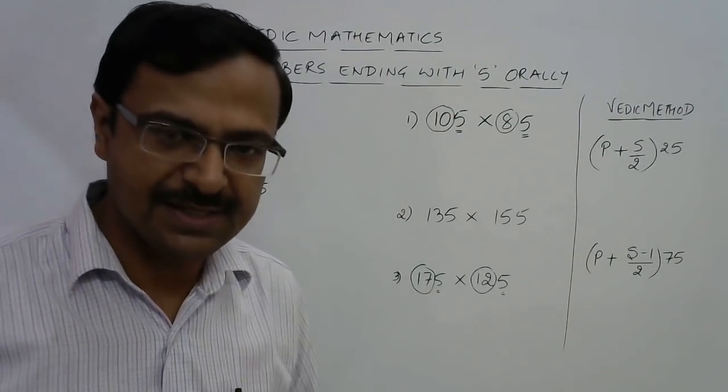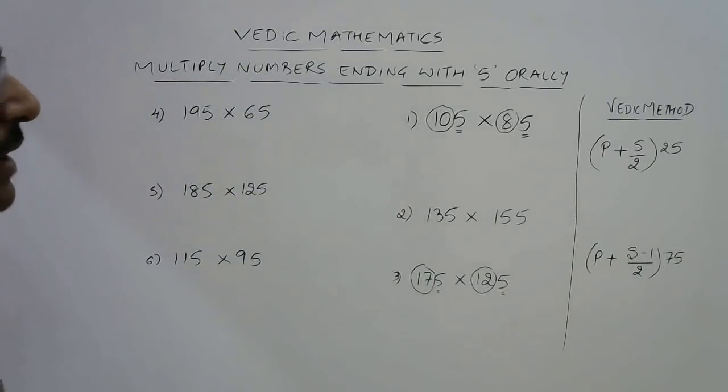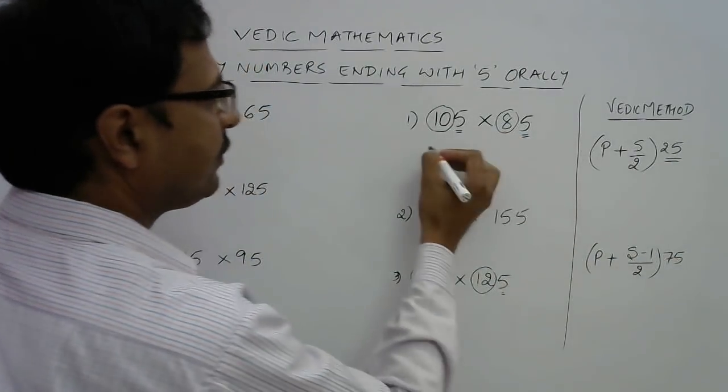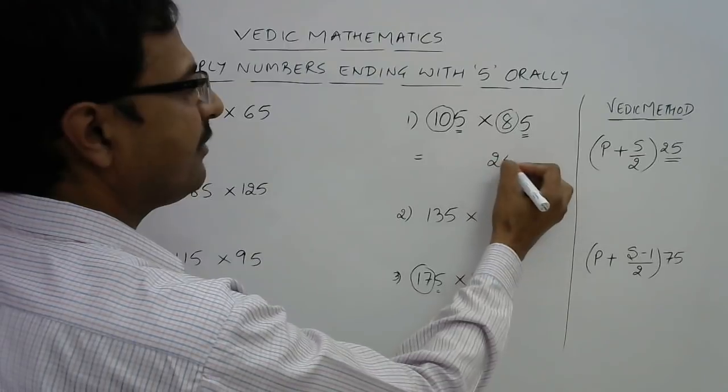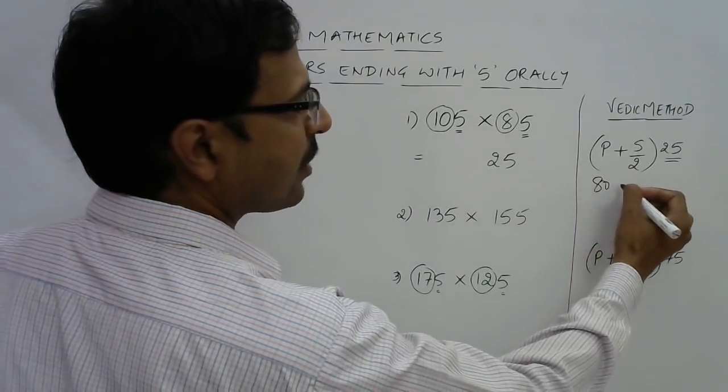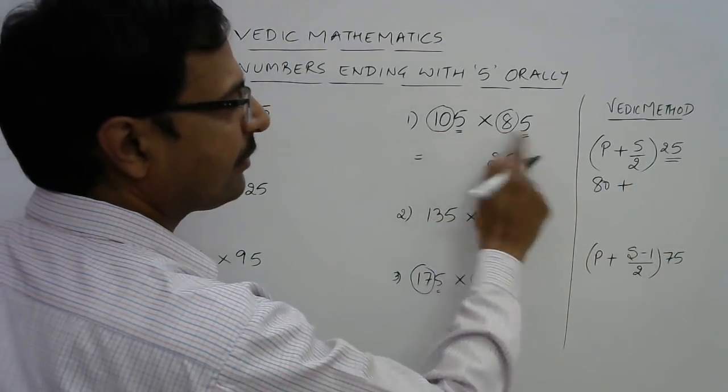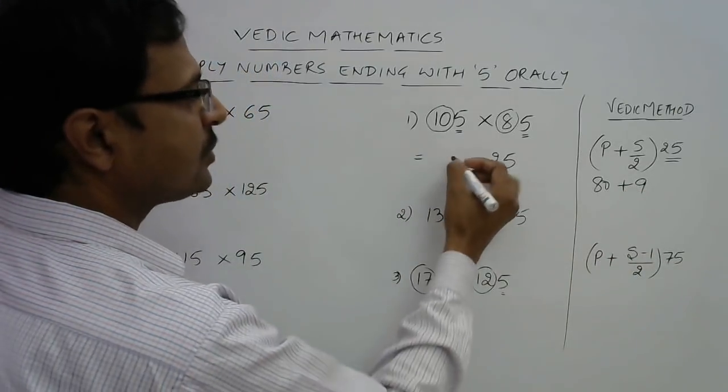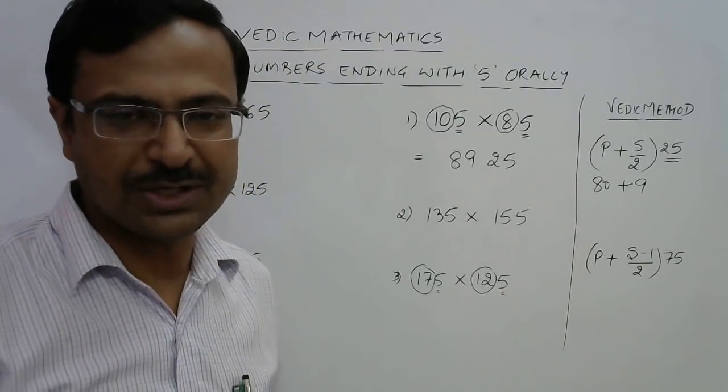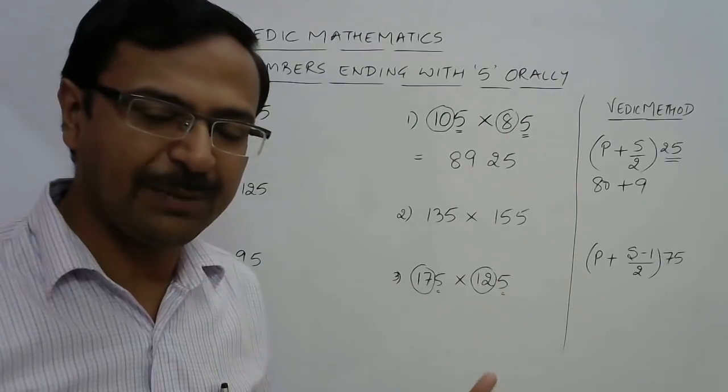Here we have 10 plus 8, which is even, so the answer will end with 25. Now 10 into 8 is 80, plus half of 18, which is 9. So 80 plus 9 is 89. Our answer will be 8925. How much time will this take? I think only 3 seconds without pen and paper.